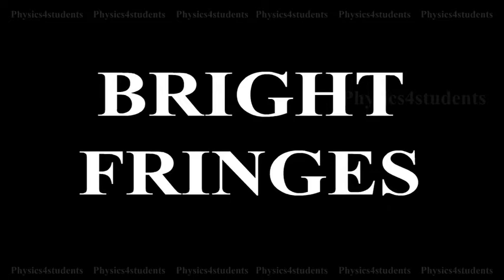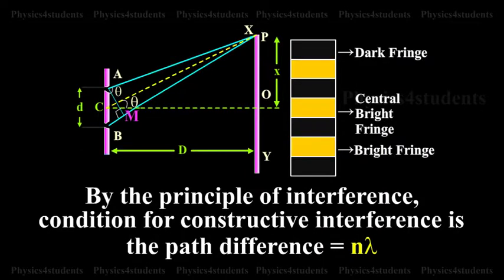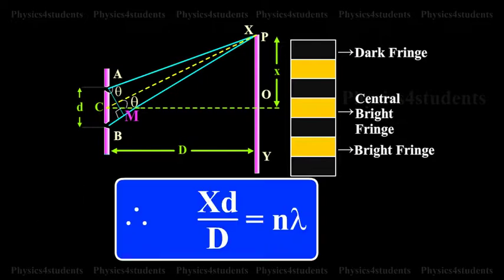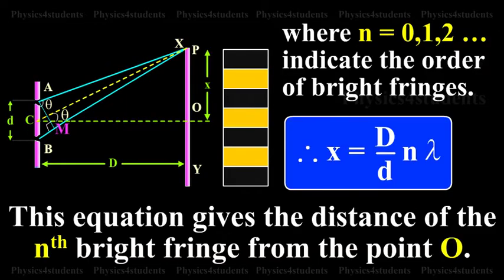Bright Fringes. By the principle of interference, the condition for constructive interference is the path difference that is equal to n lambda. Therefore, xD by d is equal to n lambda, where n is equal to 0, 1, 2 and so on, indicating the order of bright fringes.